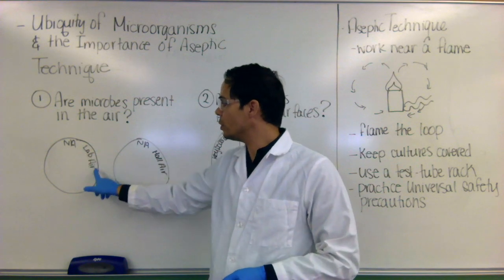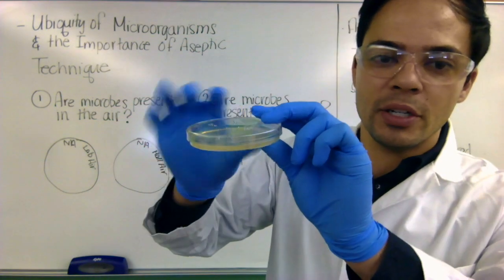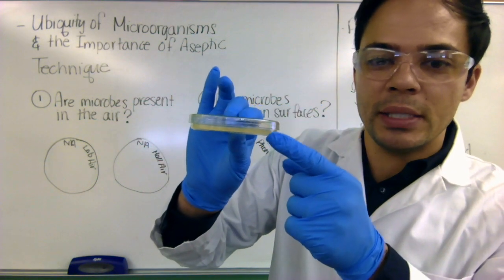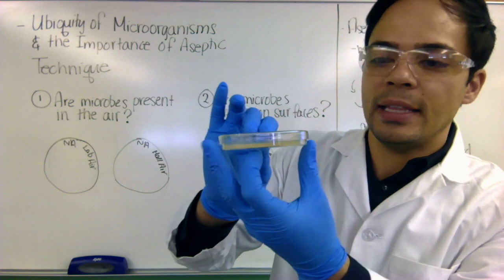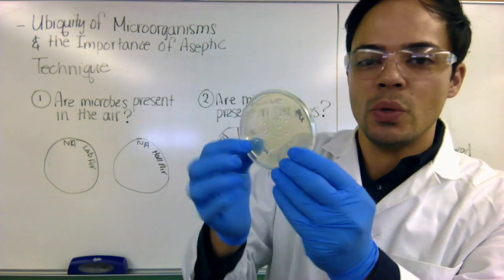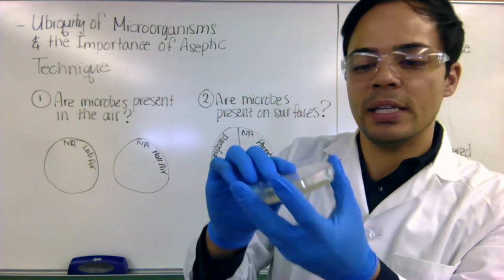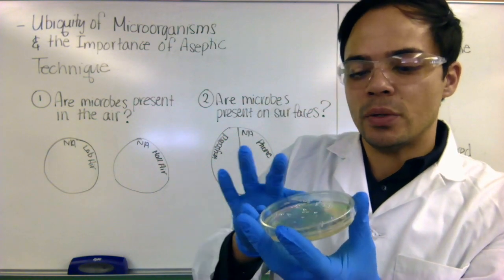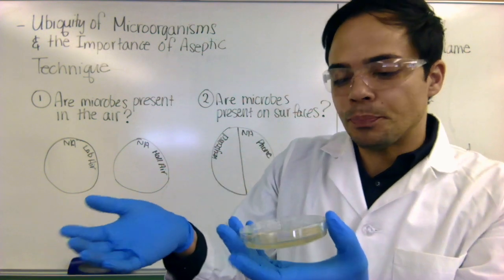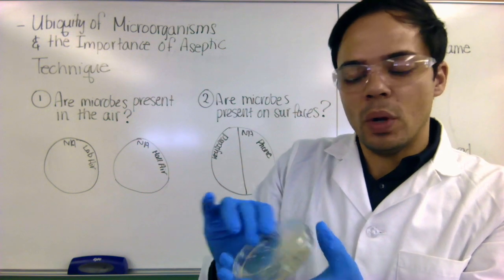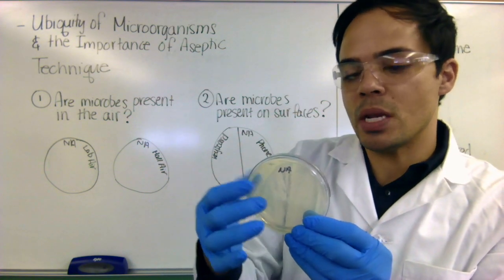Now you always want to label plates on the bottom, on the base. So notice this one has, if I actually look at it sideways, the base is the smaller part, the lid is the larger part, and the lid fits snugly on the base. So you never want to write on the lid and label the lid because lids can come off and there's no media in them. So if it should actually come off accidentally, you won't know what's on your actual medium.